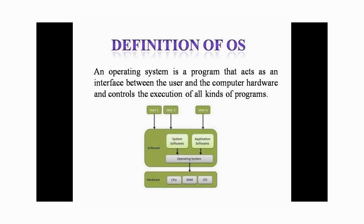System software is the inbuilt software that comes when you install an operating system. Application software is software that we users externally install. For example, installing the Zoom app on our mobile or laptop is an application software. Similarly, installing MATLAB or Xilinx VLSI software are also called application softwares.